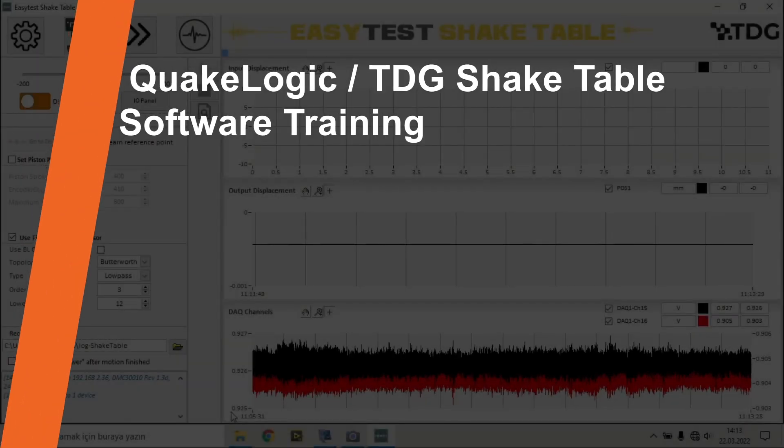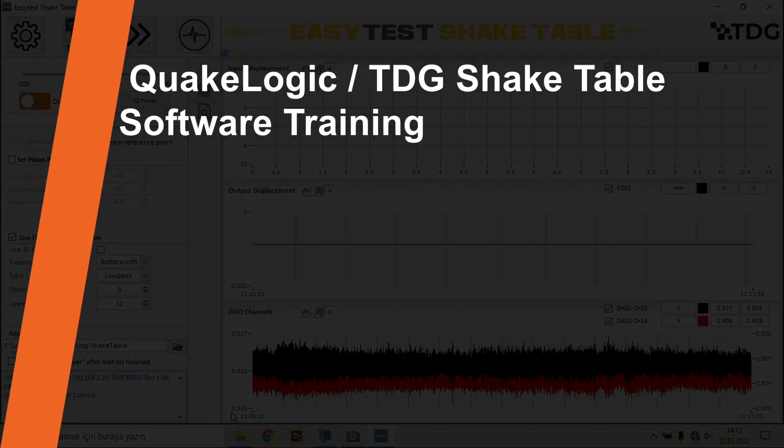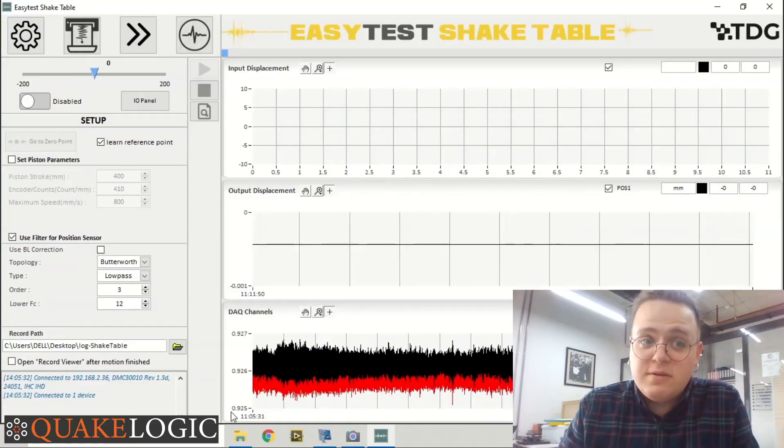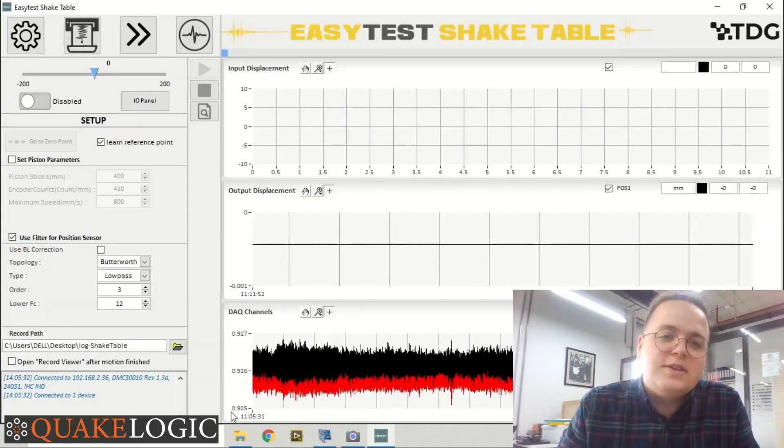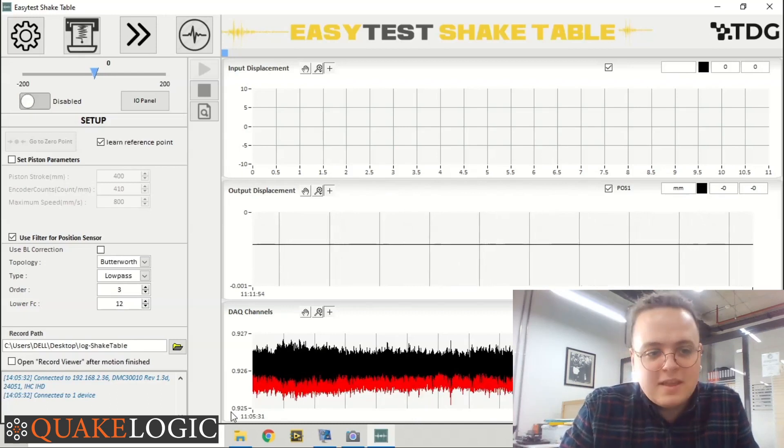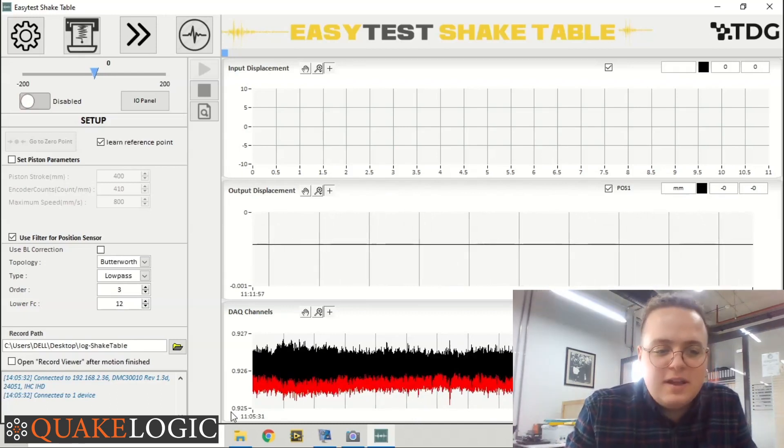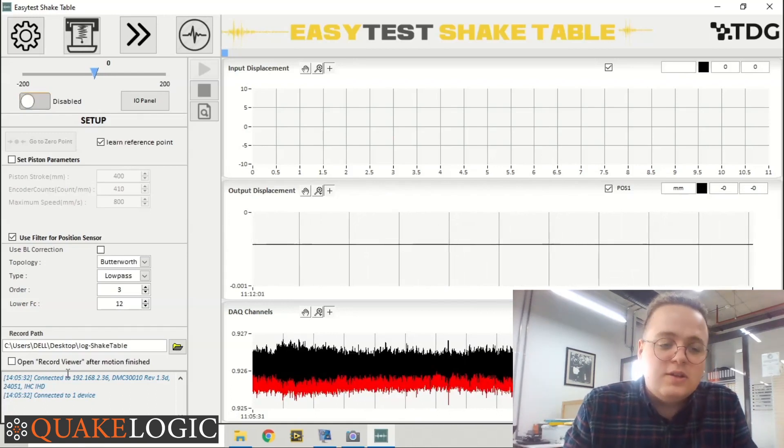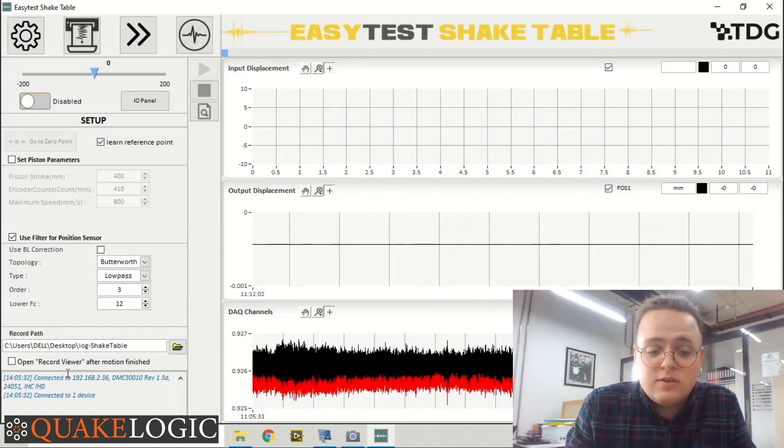Now let's talk about our software for this shake table. When we open up the software, the setup screen will appear on the left, and on the right we can see several graph displays. As can be seen from the bottom left with the blue color text, our software automatically connects to the shake table which is connected to our computer via Ethernet.